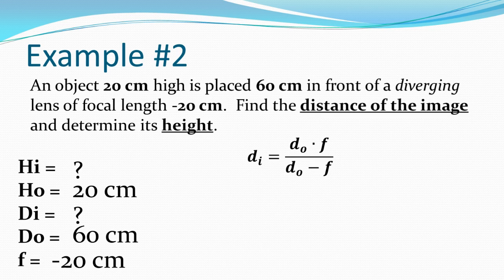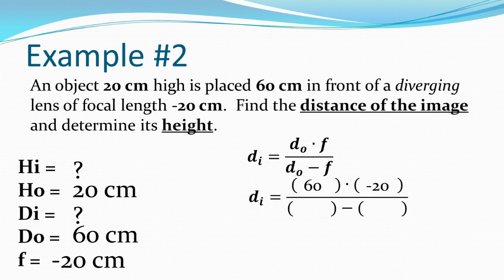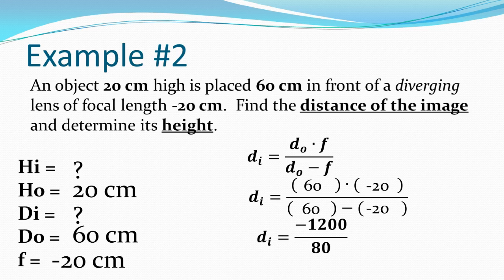Plugging into di = (do × f) / (do − f): do = 60, f = −20. The numerator is 60 times −20 = −1,200. The denominator is 60 minus −20, which is 60 + 20 = 80. Dividing gives di = −15 centimeters. Since the distance of the image is negative, this is a virtual image, located on the same side of the lens as the object.